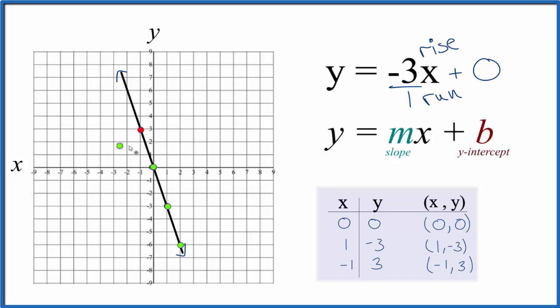Likewise, we could go the opposite direction. We could go up 1, 2, 3 and over 1 in the opposite direction to the left. Do it one more time: up 1, 2, 3, over to the left. All the points are on the line. So we did the first part correctly.